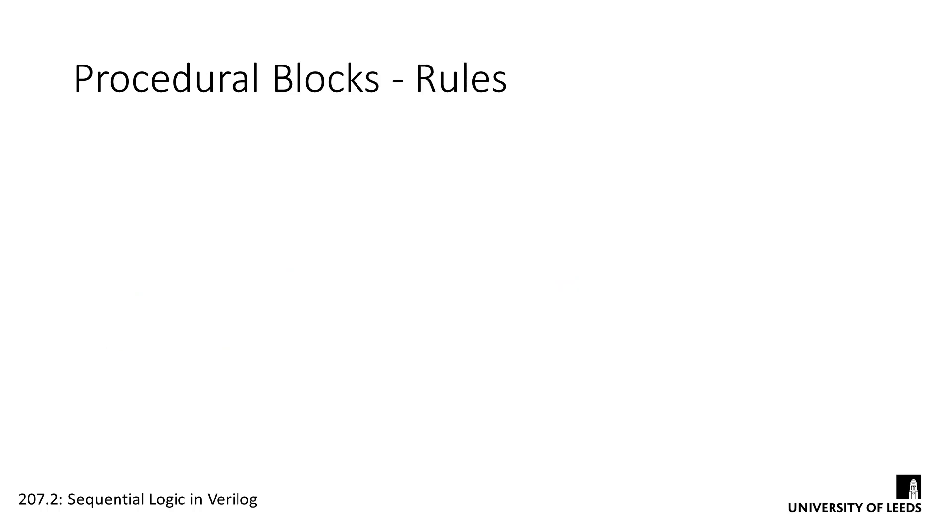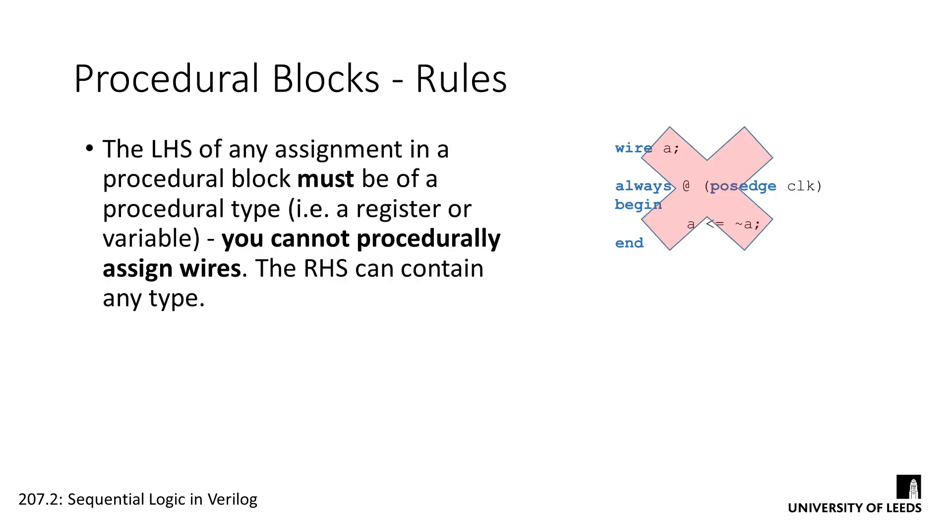As procedural blocks are complex constructs, there are some specific syntax and language rules that we need to follow. If any of these rules are broken, your code will not compile. Firstly, the left-hand side of any assignment in a procedural block must be of a procedural type, or in other words, a register or a variable. You cannot procedurally assign wires.